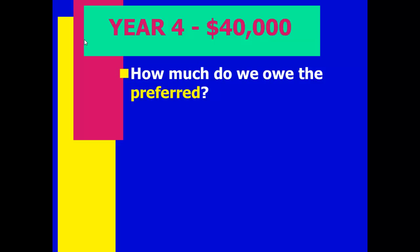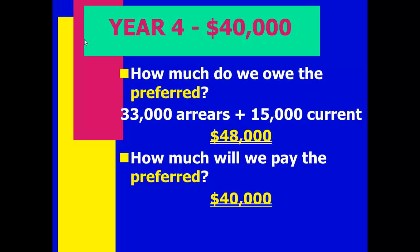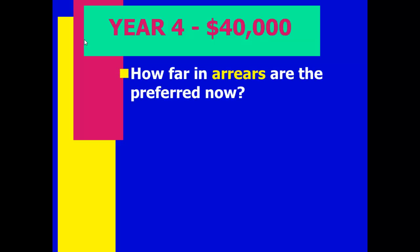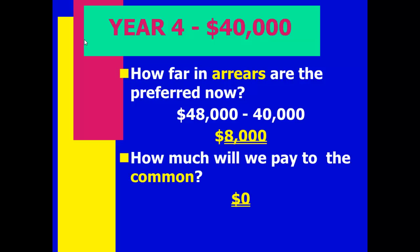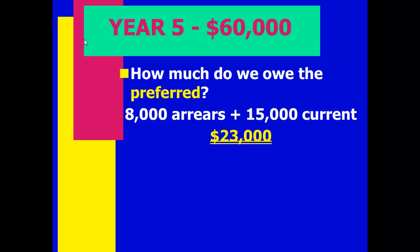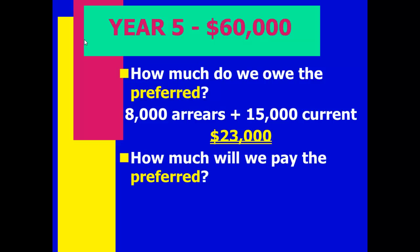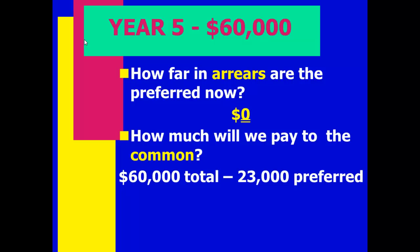Year 4: We have $40,000. We owe the preferred $33,000 in arrears plus $15,000 current year — $48,000 total. We pay them all $40,000 we have, leaving us still $8,000 behind. Common gets nothing. Year 5: We have $60,000. We owe $8,000 arrears plus $15,000 current year — $23,000 total. We pay the full $23,000, finally caught up with zero in arrears. Common gets $60,000 minus $23,000 equals $37,000.